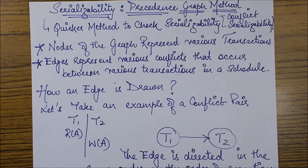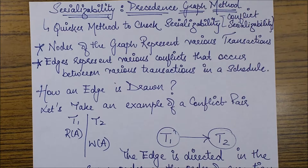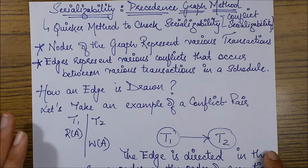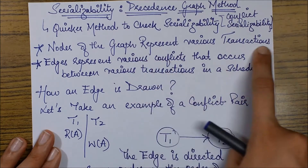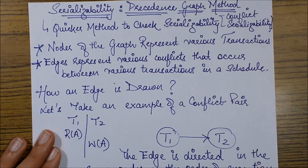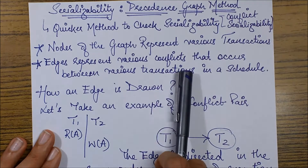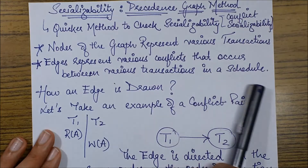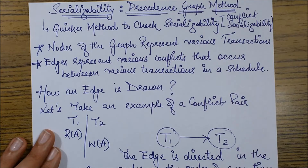What does this precedence graph method actually do? We basically represent a graph with the help of some nodes and edges. The nodes of the graph represent transactions, and the edges represent various conflicts that occur between various transactions — specifically the conflict pairs that we studied in the previous session.